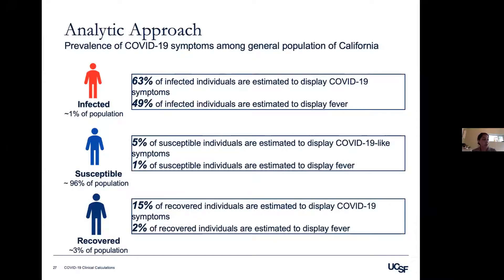In our theoretical company of 100 individuals, we modeled three possible infection states among employees, mirroring the infection states of the general population in California, with prevalence estimates guided by a limited number of reports available for California — specifically two antibody seroprevalence studies from Santa Clara County and Los Angeles County, published in April. We modeled the prevalence of COVID-19 symptoms among each infection state, using literature reviews and expert clinician opinion where data was limited. A key finding is that the high prevalence of asymptomatic carriers ultimately compromises the ability of symptom-based screening tools to detect COVID-19 cases.